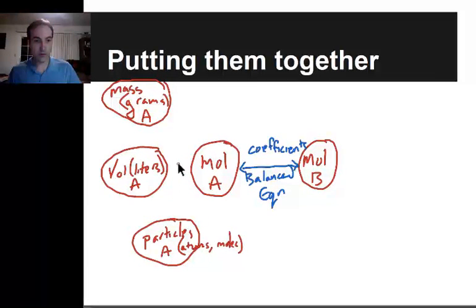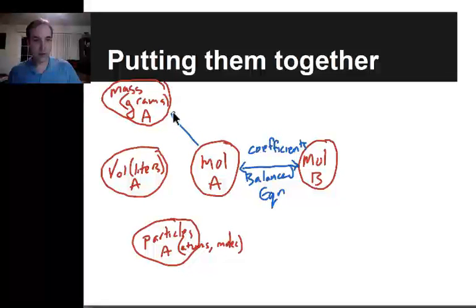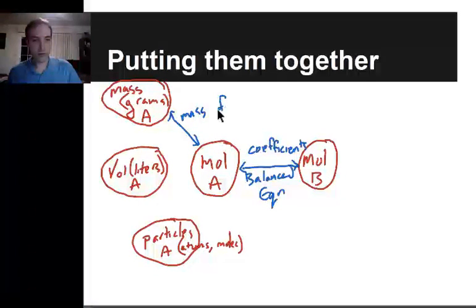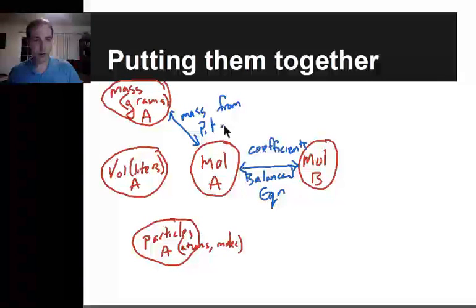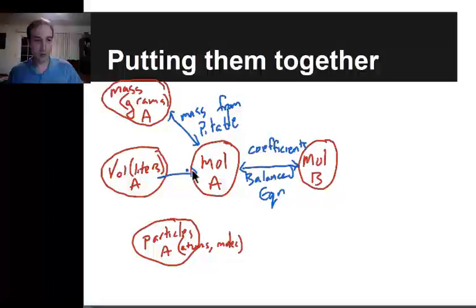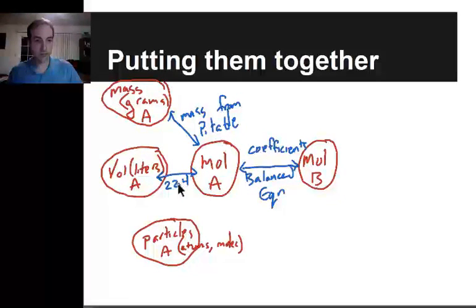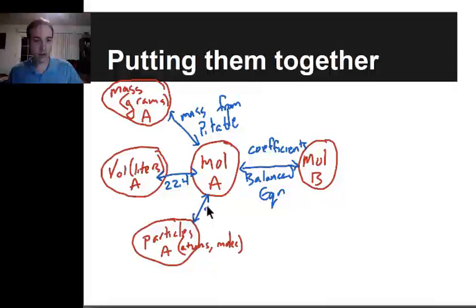To get from moles of A to grams of A, I would need to use the mass from the periodic table. To get from moles of A to volume of A, I would use the value of 22.4. And to get from moles of A to particles of A, I would use 6 times 10 to the 23rd — the magical mole number.